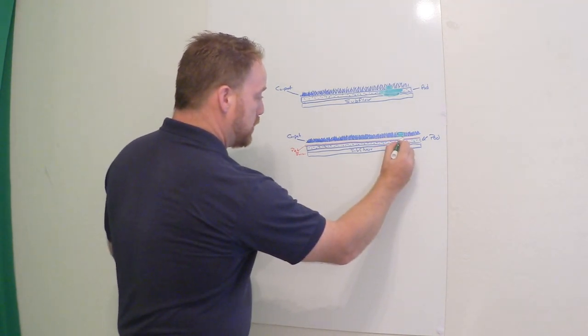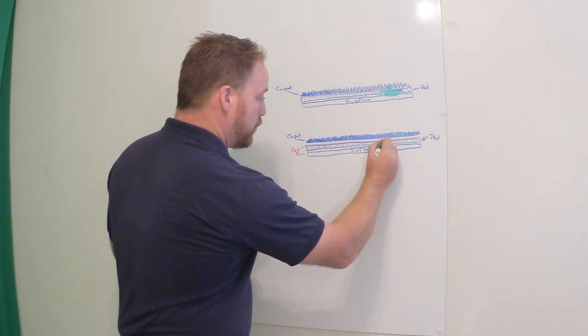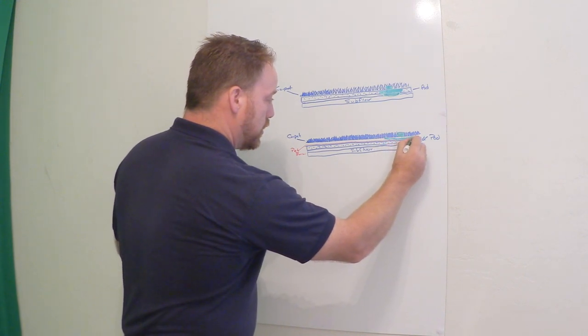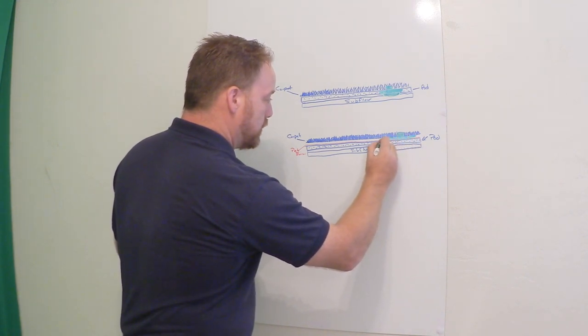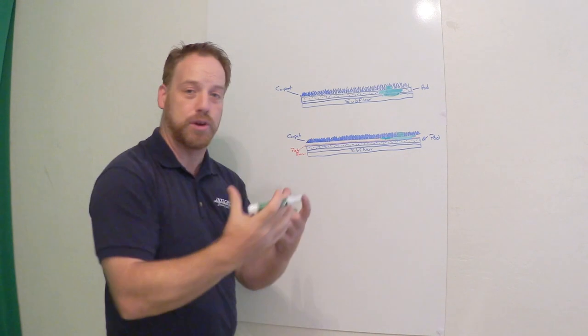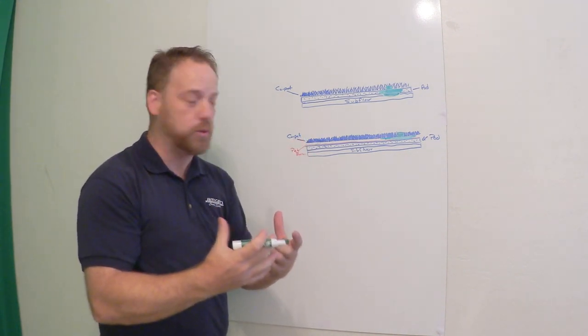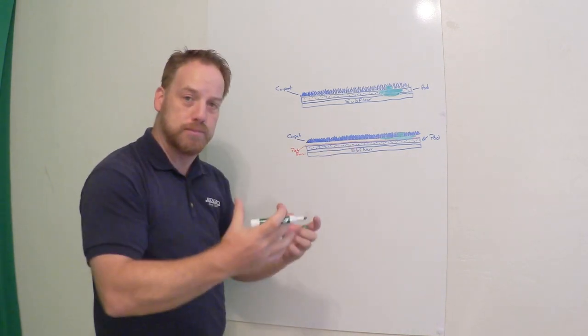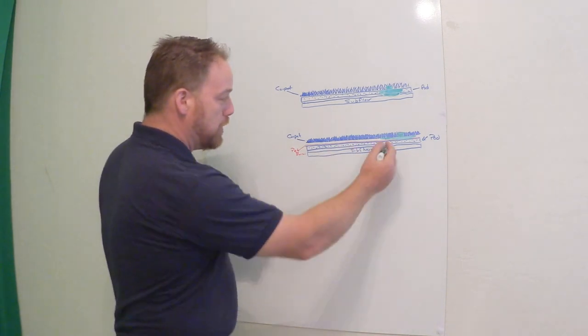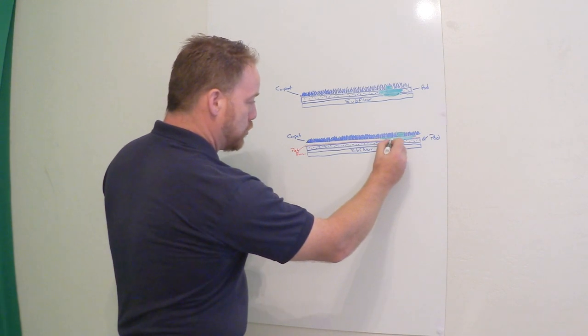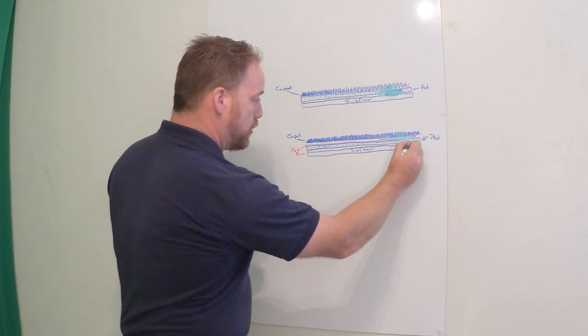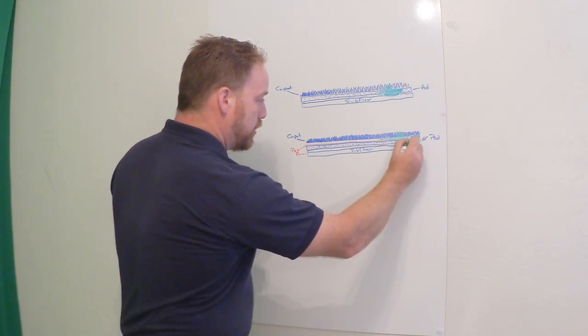So it actually spreads out even further, creates a bigger area of damage because it can't get into the pad where it gets absorbed, kind of like a diaper absorbs and pulls the moisture away from the baby's little booty. Well the pad does the same thing. It absorbs it and pulls it away from the carpet. But in this case it doesn't get to the pad so it just runs along this moisture barrier and it becomes a much bigger area.